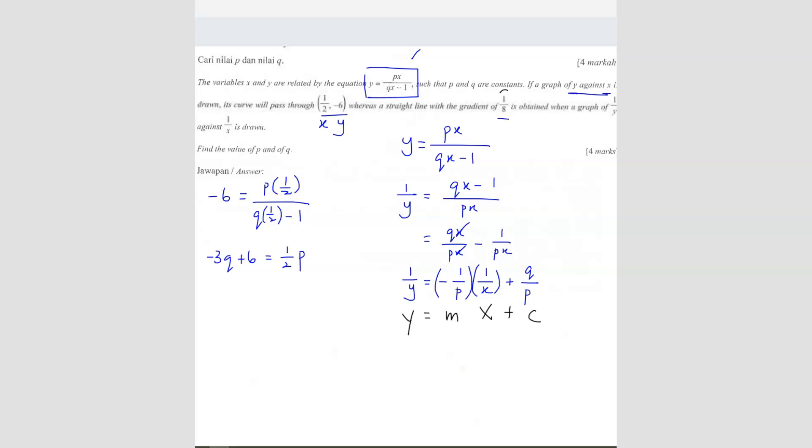This is the y equals to mx plus c because it's 1 over y against 1 over x. So these two will be the y and the x. So we have the gradient is this. So the question gave you what? 1 over 8 is the gradient. So we can say that negative 1 over p is equals to 1 over 8. So p is equals to negative 8.